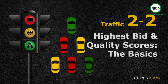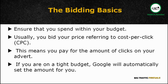Welcome back. In this module, you'll learn two major components that determine the success of your adverts: the highest bid and quality score. Let's understand the basics of bidding. First and foremost, you want to ensure that you spend within your budget. For starters, it's common to bid your price referring to cost-per-click, or CPC, which simply means that you pay for the amount of clicks on your advert. Google allows you to pay the maximum bid amount of your chosen keyword, or if you have a tight budget, you can choose the automatic option — known as the maximum cost-per-click bid.